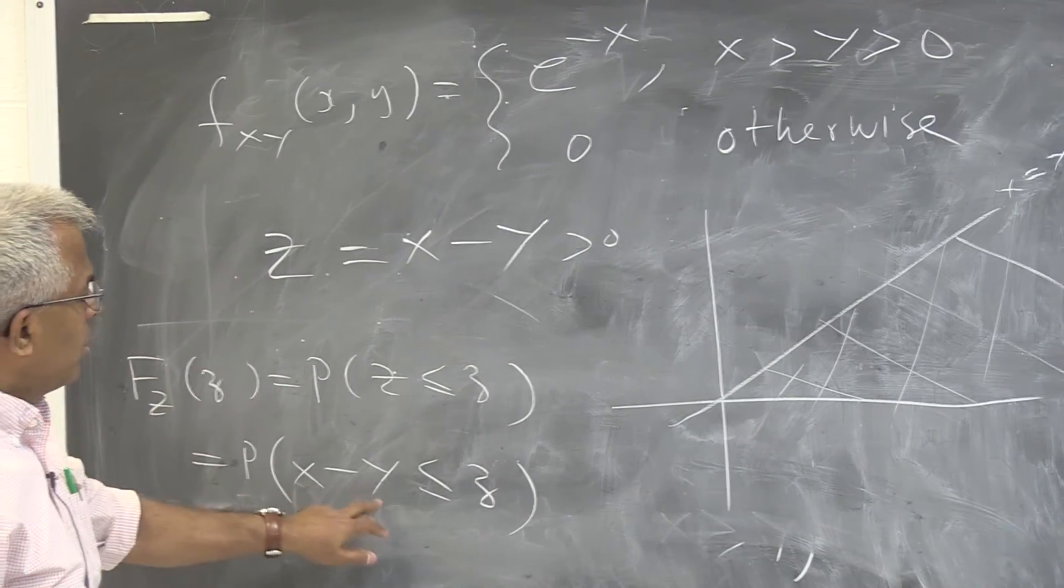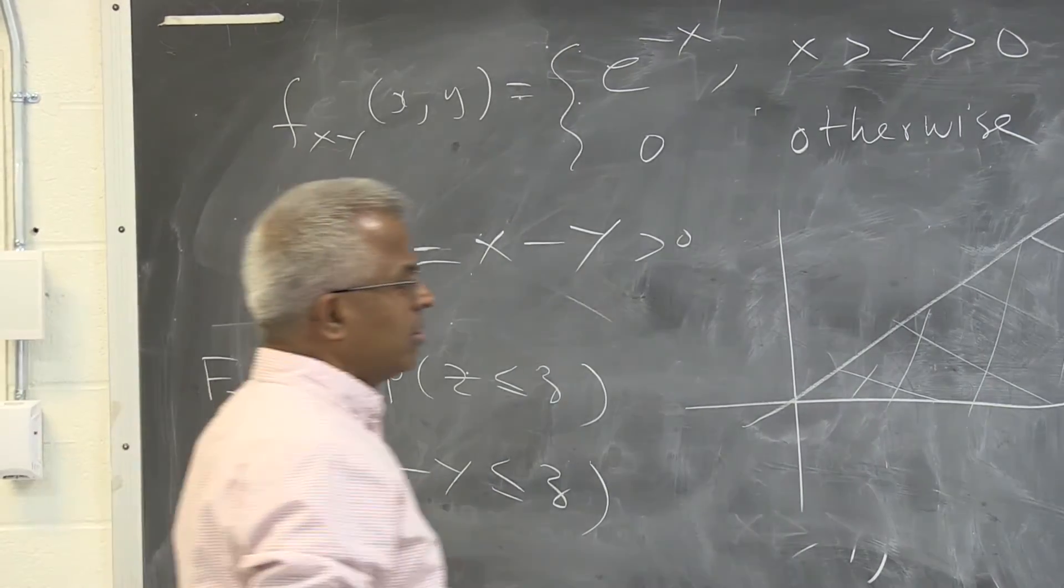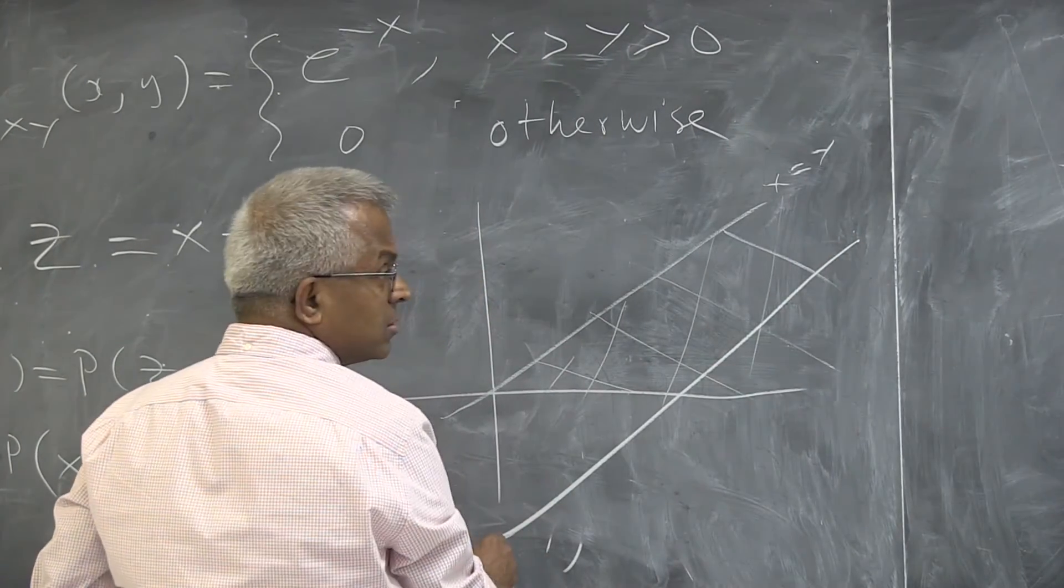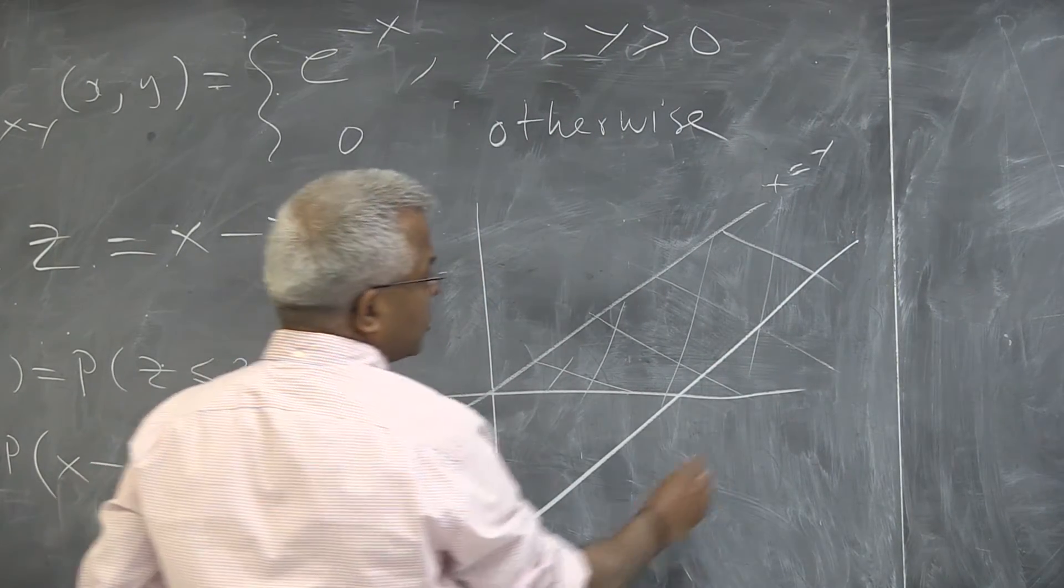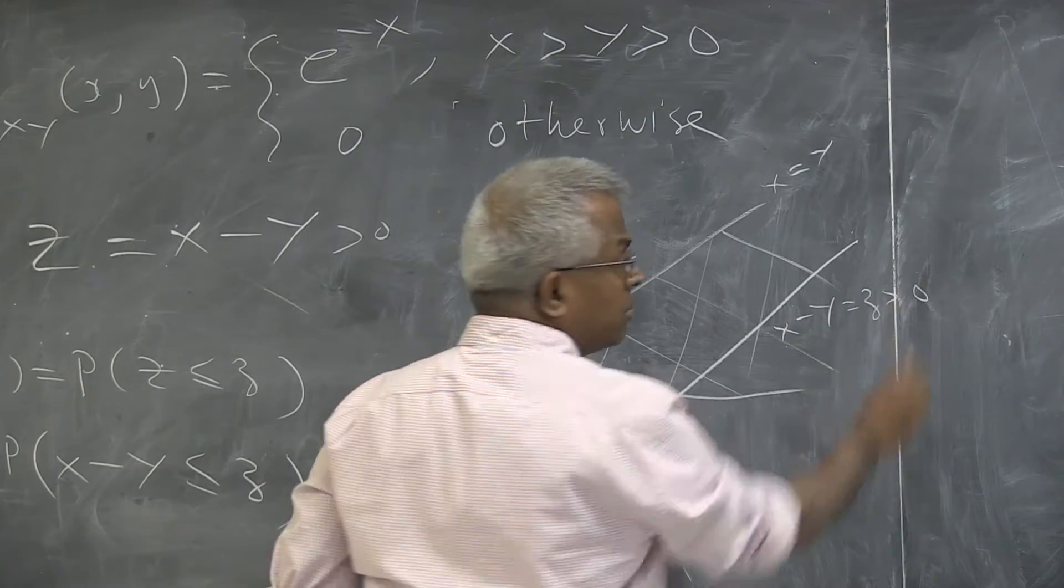We need to find out the region where x minus y is less than or equal to z for z positive. That line is going to be like this. This is the line x minus y equal to z, z positive.